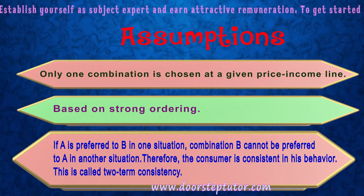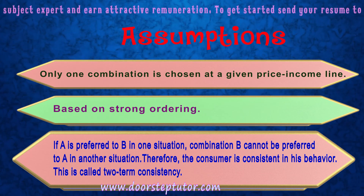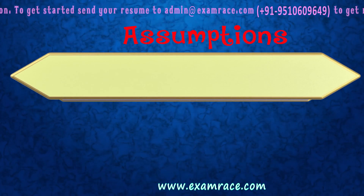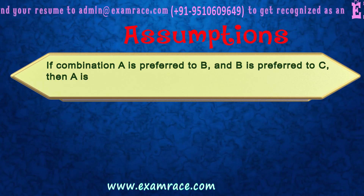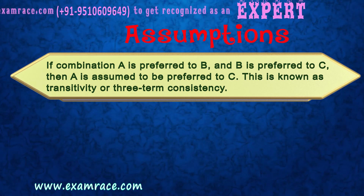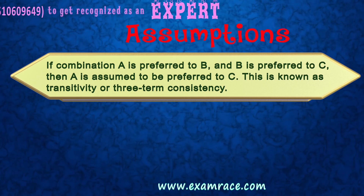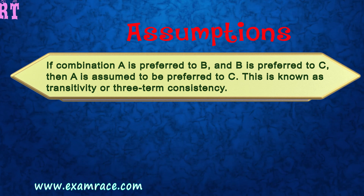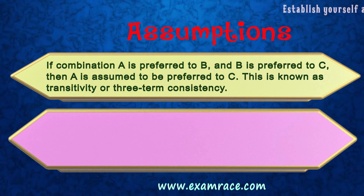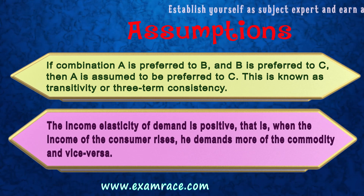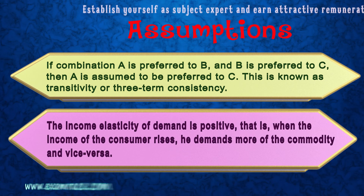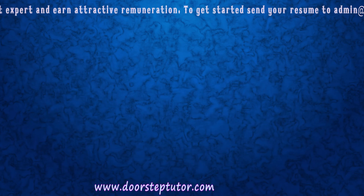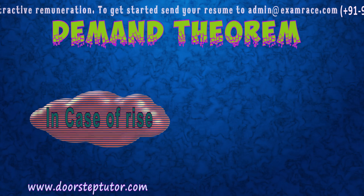The sixth assumption is consistency: if combination A is preferred to B in one situation, then B cannot be preferred to A in any other situation. The seventh assumption is transitivity, or three-term consistency: if combination A is preferred to B, and B is preferred to C, then combination A is assumed to be preferred to combination C. The last assumption is that income elasticity of demand is positive — that is, when the income of the consumer rises, demand also rises, and vice versa.